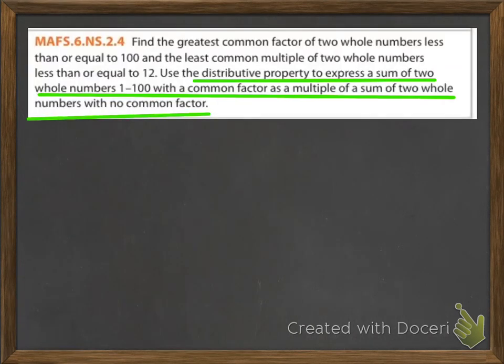The standard we will be covering is MAFS.6.NS.2.4. It's what's highlighted in green or underlined in green this time. We're going to use the distributive property to express a sum of two whole numbers 1 through 100 with a common factor as a multiple of a sum of two whole numbers with no common factor. I know that was kind of a mouthful and very wordy, but I promise by the end of this video it will make sense.